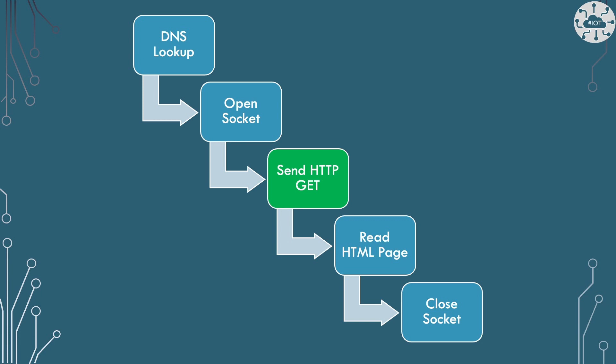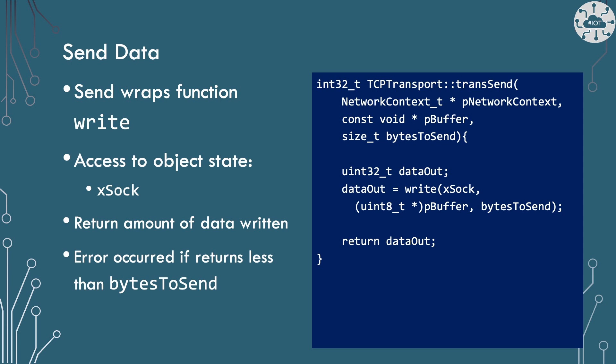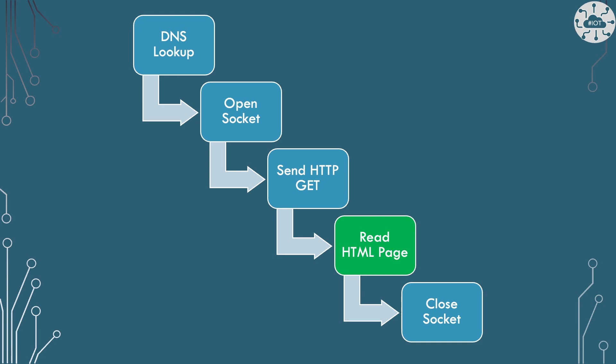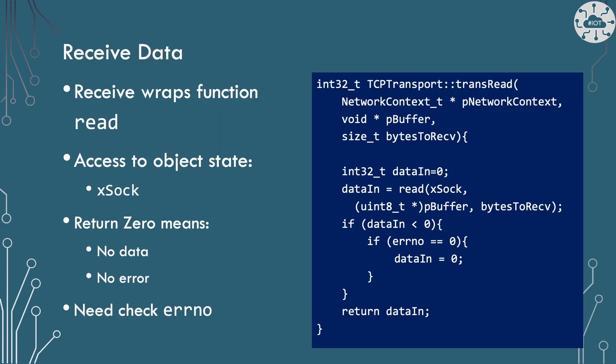The transsend member function is a wrapper around the LWIP write function, with access to our connected socket via the object member data item x_socket. We return the number of bytes written; write returns a negative value on error. For receiving, the receive function similarly wraps the LWIP read function. We return the number of bytes read — zero means no data was read, and negative values mean an error. In testing I got some negative numbers back from read when no error had actually occurred, so I check errno to confirm a real error before passing back a negative value.